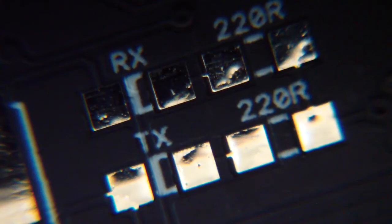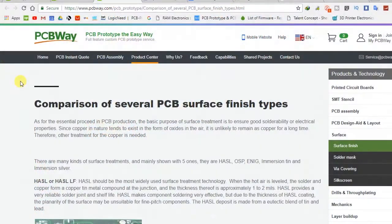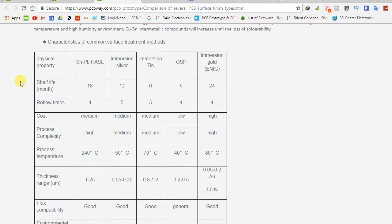According to PCB way website, HASL gives about 18 months of pad shelf life. The process cost is medium. Surface thickness can be from 1 to 25 micrometers. Flux compatibility is good.